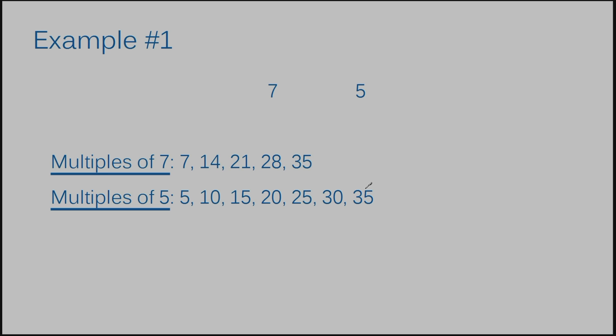The least common multiple means the smallest number that the two numbers have in common — it's the multiple that is the least in value. So I'm going to look at these two rows of multiples and figure out the first number they have in common, and that would be 35. The 35 appears in the multiples of seven and also in the multiples of five.